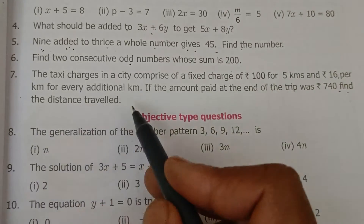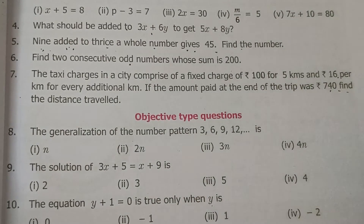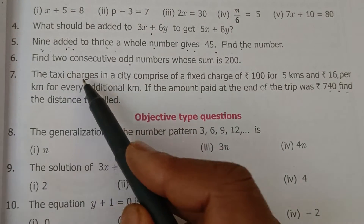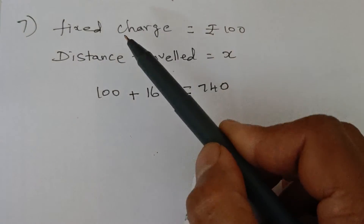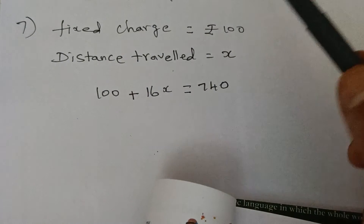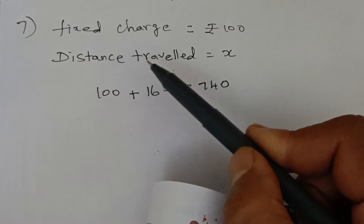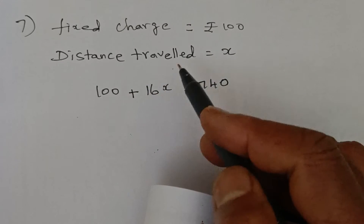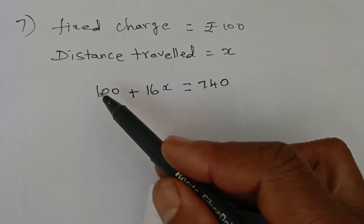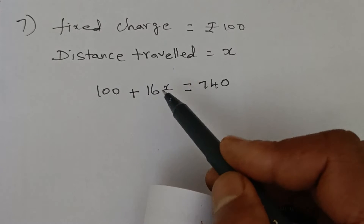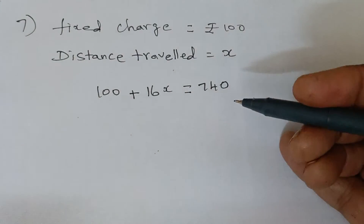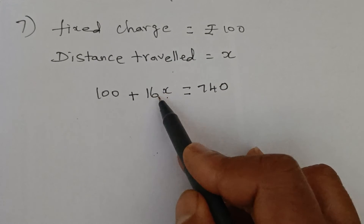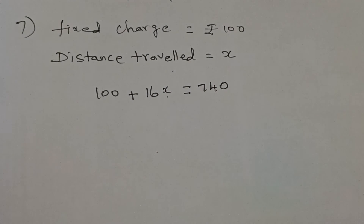If the amount paid at the end of a trip was rupees 740, find the distance traveled. Let the distance traveled be x kilometers. For 1 kilometer we pay 16 rupees, so for x kilometers we pay 16x rupees. Fixed charge is 100, extra charge is 16x, and total amount paid is 740. The equation is: 100 + 16x = 740.